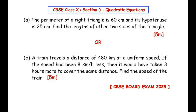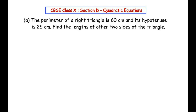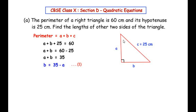The perimeter of a right triangle is 60 centimeters and its hypotenuse is 25 centimeters. Find the length of the other two sides of the triangle. Let us understand this question using a rough figure. We have a right-angled triangle whose perimeter is 60 cm and hypotenuse is 25 cm. We label the two unknown sides as a and b, and the hypotenuse c = 25 cm. We need to find the lengths of a and b.